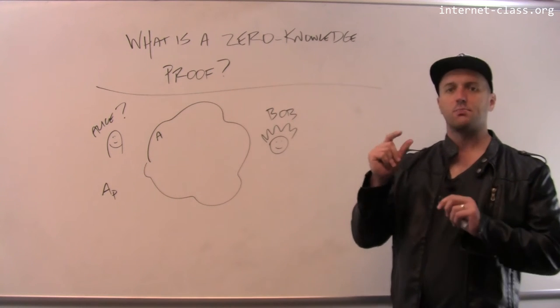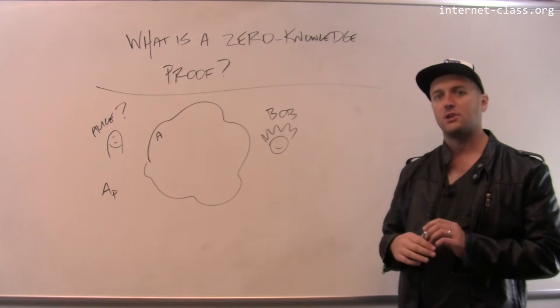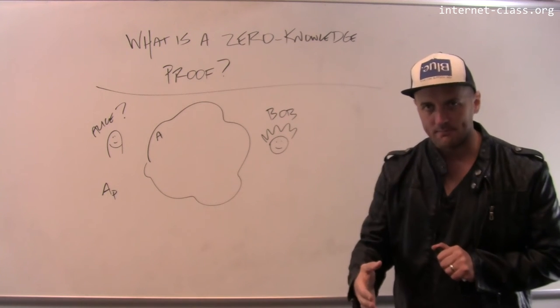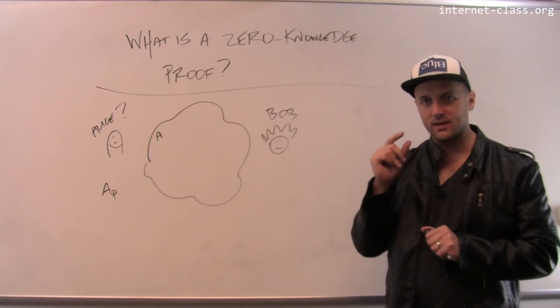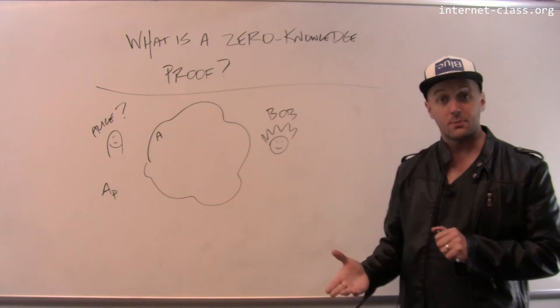So she needs to be able to prove to Bob, or she and Bob need to come up with a process by which Bob can determine that this is actually Alice and Alice doesn't have to reveal any information about her private key. This is actually pretty straightforward.